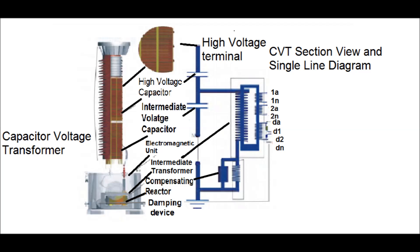The compensating reactor, the damping device, and terminals 1a, 1n, 2a, and 2n are the secondary terminals for the CVT. A damping device is introduced to nullify or reduce the ferroresonance problem in CCVT.